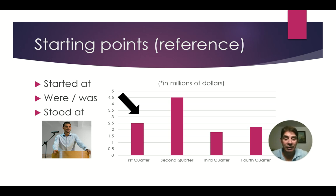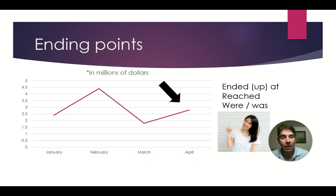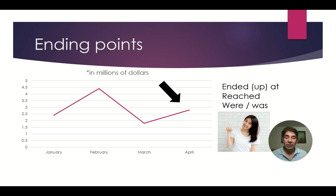Let's talk about starting points. These are usually points of reference, telling us where the starting point is. We can use words like started at, was or were, or stood at to indicate a particular starting point. For ending points, we can say ended at or ended up at to indicate the final point, or reached a point, or was or were.